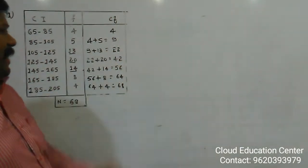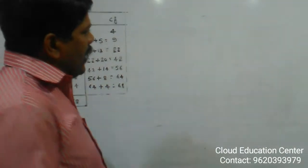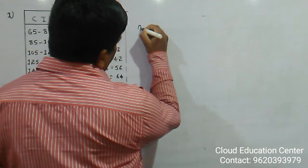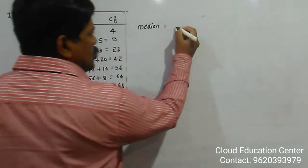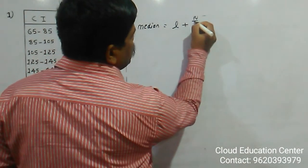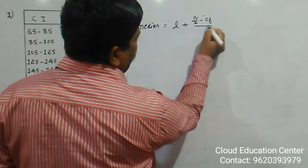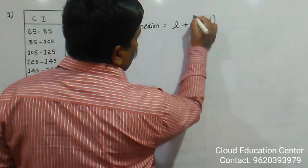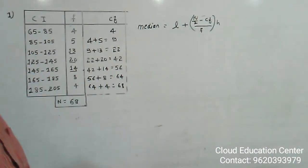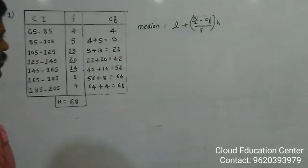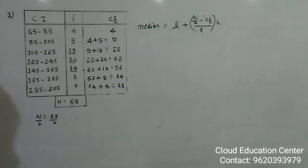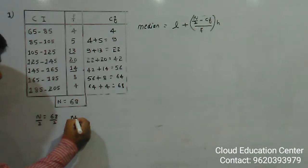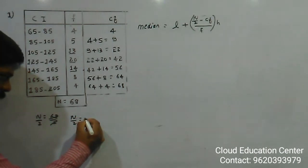We now have the CF values. To find the median we use the formula: Median = L + [(n/2 − CF) / f] × h. First we find n/2: n = 68, so n/2 = 68/2 = 34.